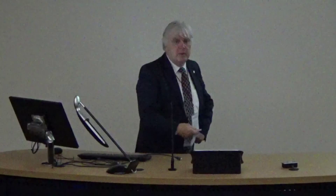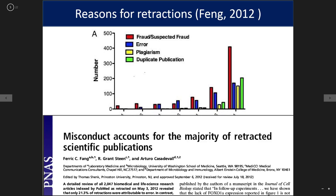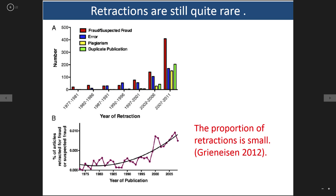This is an issue which is pretty important. The reasons for retractions have been examined by many people. This particular analysis breaks it down over time: those retracted because of fraud or suspected fraud, error, plagiarism or duplication. This analysis indicated that misconduct accounts for the majority of retractions. The proportion of total retractions relative to papers published is still pretty small, but it can cause an awful lot of trouble.